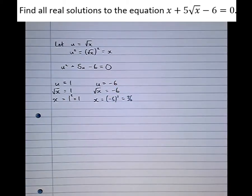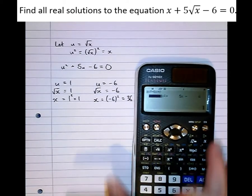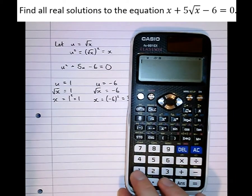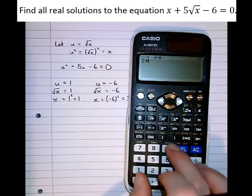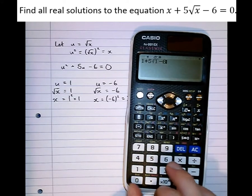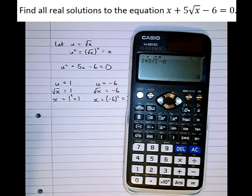Okay, so let's just double check that these answers are correct. Let's substitute them into the original equation to see if it works. So we've got, if x equals 1, we've got 1 plus 5 root 1 minus 6 equals 0, which is what we wanted,